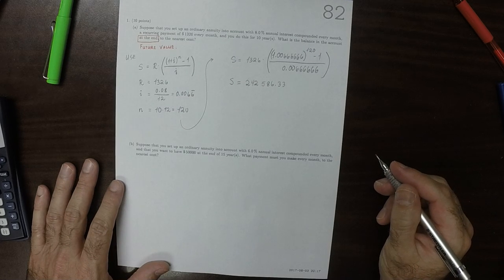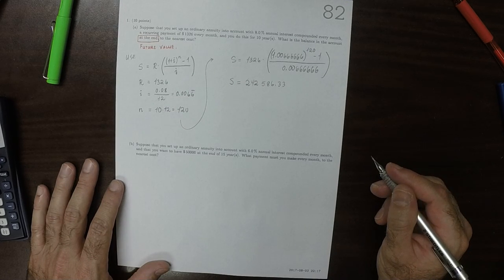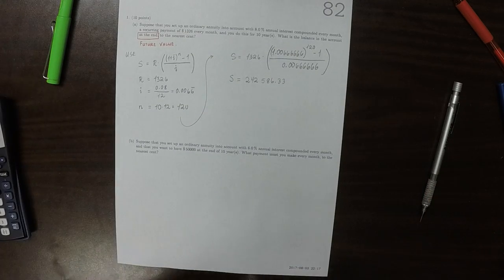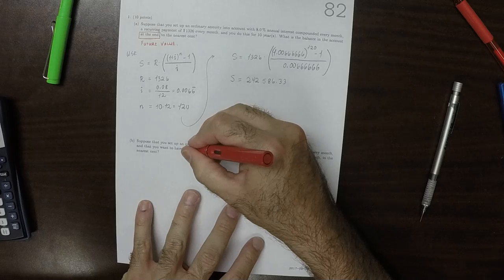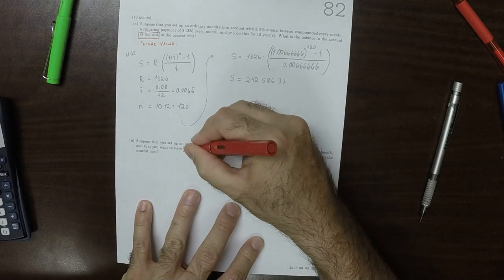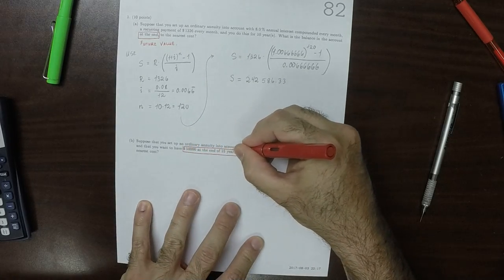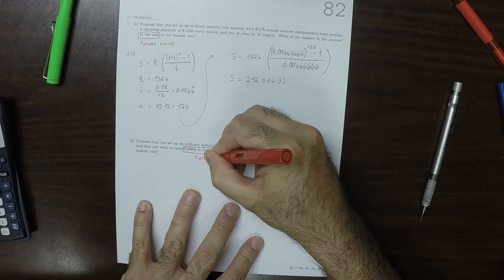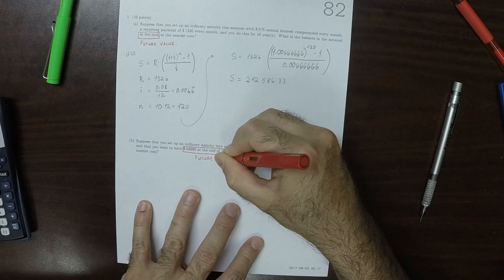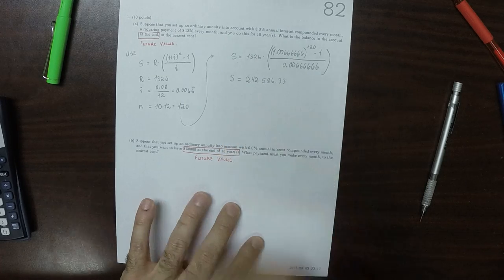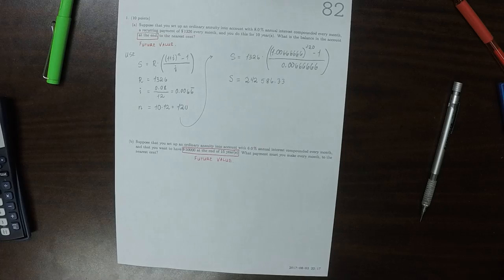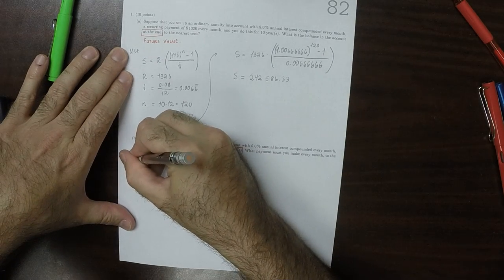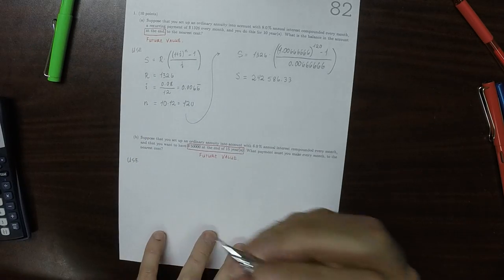Okay, so now again, because it says $50,000 at the end, this is telling us that we're talking about a future value. So as a result, we're going to use that same formula written above.